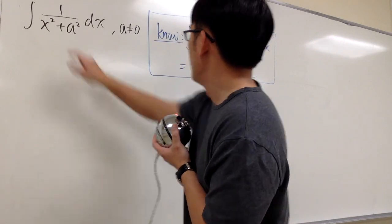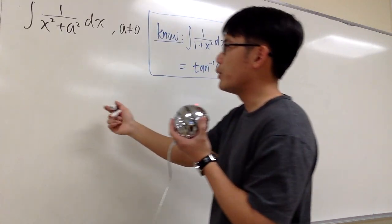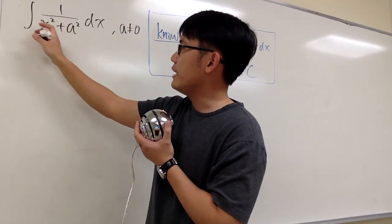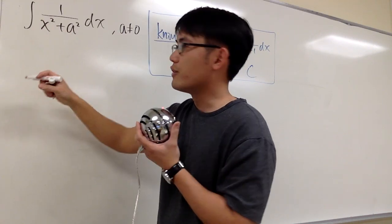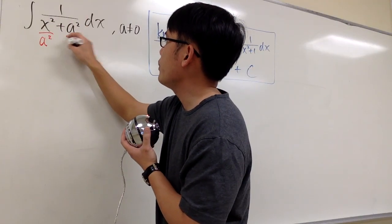We don't want the a squared, though. We know how to handle this when it's 1. So what we can do is, a couple of ways to do it, we can factor out the a squared on the denominator, but my personal favorite is, look at this fraction, and let's divide everything by a squared.